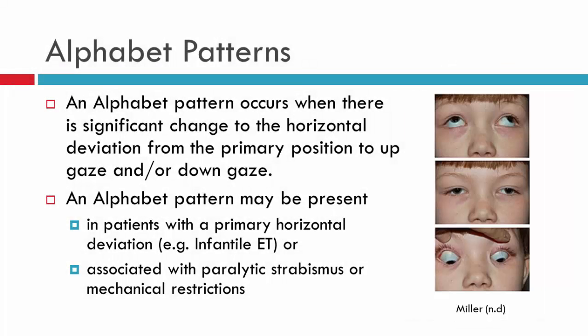An alphabet pattern may present in a patient with concomitant strabismus — such as an infantile ET or divergence excess XT — where some patients may also have an A or V pattern. They can also occur in patients with paralytic strabismus or mechanical restrictions. In this subject we focus on the etiology, clinical characteristics, diagnosis, and management of a patient with an alphabet pattern, which will be covered in subsequent videos.